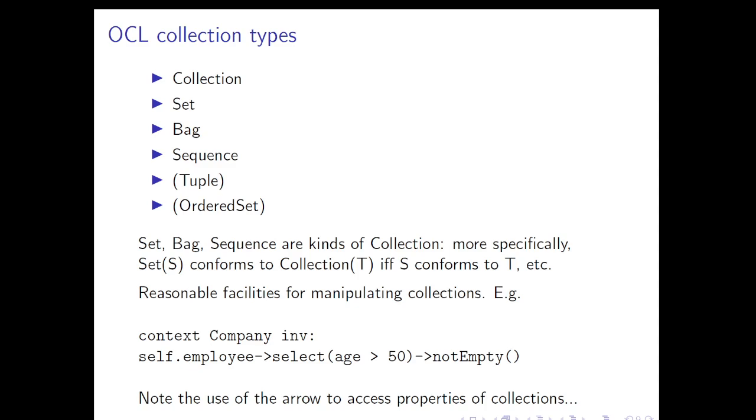So if we go from self.employee->select(age > 50), what we've now got is a collection of employees that are linked to this object of class Company and whose age is greater than 50. And now the arrow notEmpty says that that collection is not empty. In other words, what we're saying is that every company must have some employee whose age is greater than 50. Jolly good thing if you ask me.